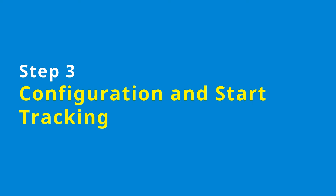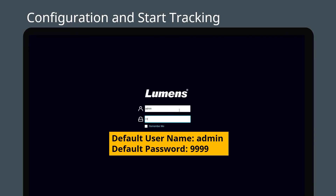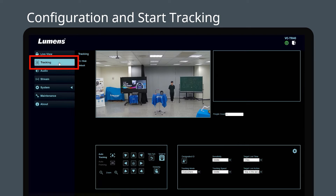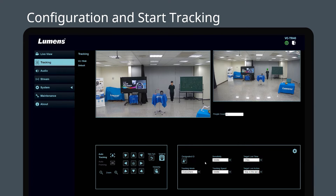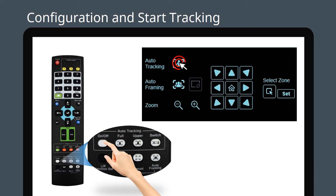Step 3: Configuring your camera and start tracking. First, find the IP address of the VCTR40 and log into its web page. The default account and password are admin and 9999. Go to the Tracking tab to select the tracking mode and set the parameters. Click Auto-Tracking on the web page, or press On on the remote control to get started.